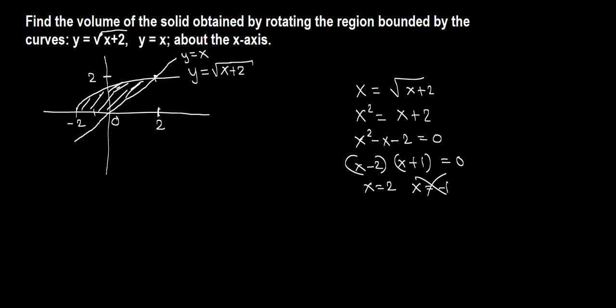Now we want to rotate this region about the x-axis. There's a consideration: from negative 2 to 0, the lower curve is the x-axis, so y equals 0. But from 0 to 2, the lower curve is y equals x and the upper curve is always root x plus 2. So we need to divide into two parts because the lower curve changes at x equals 0.